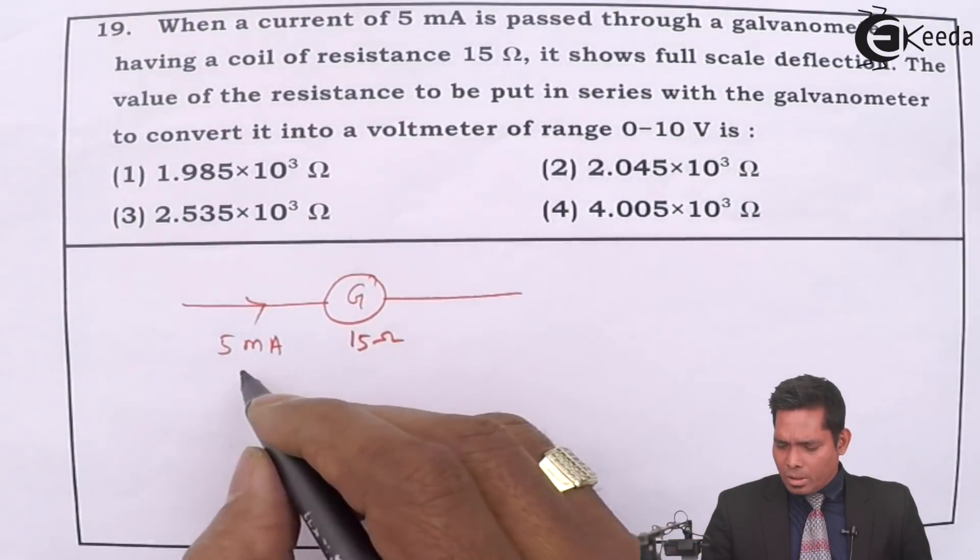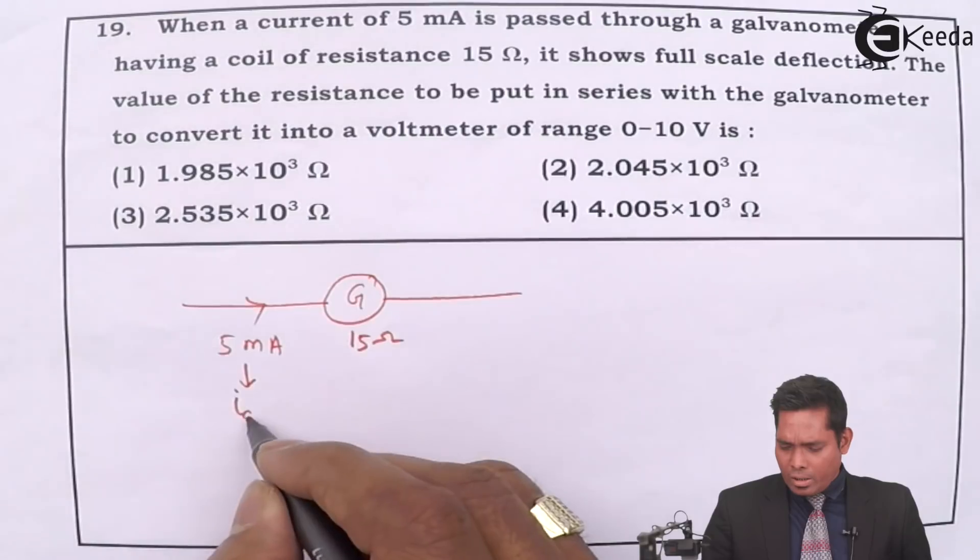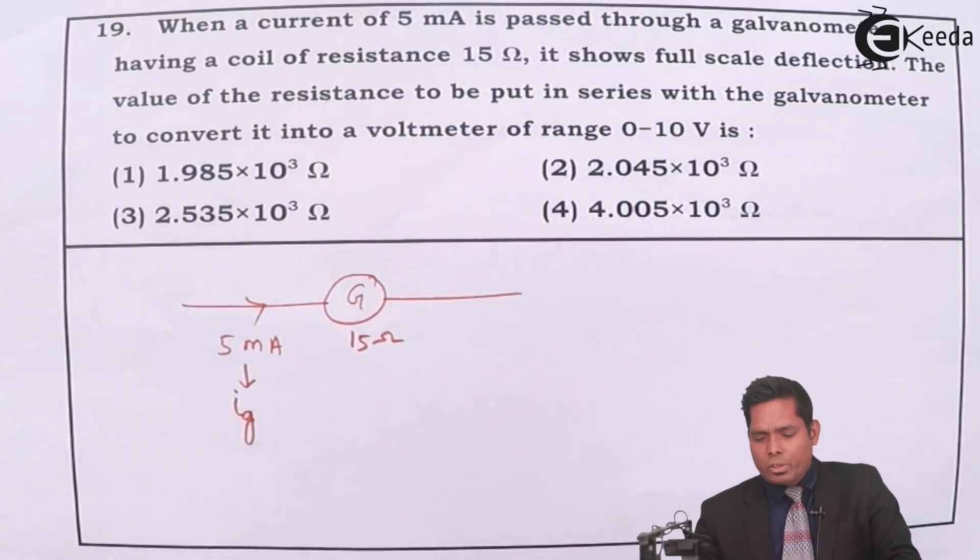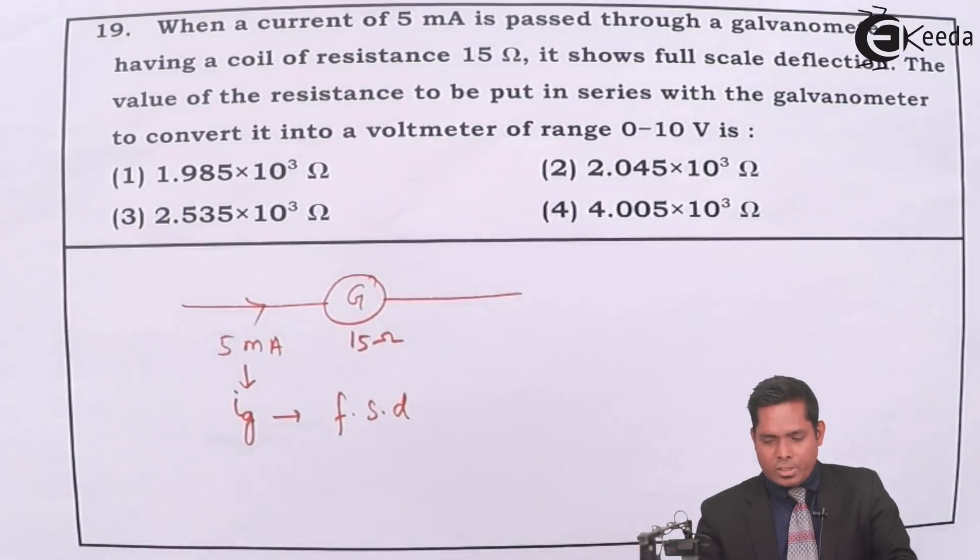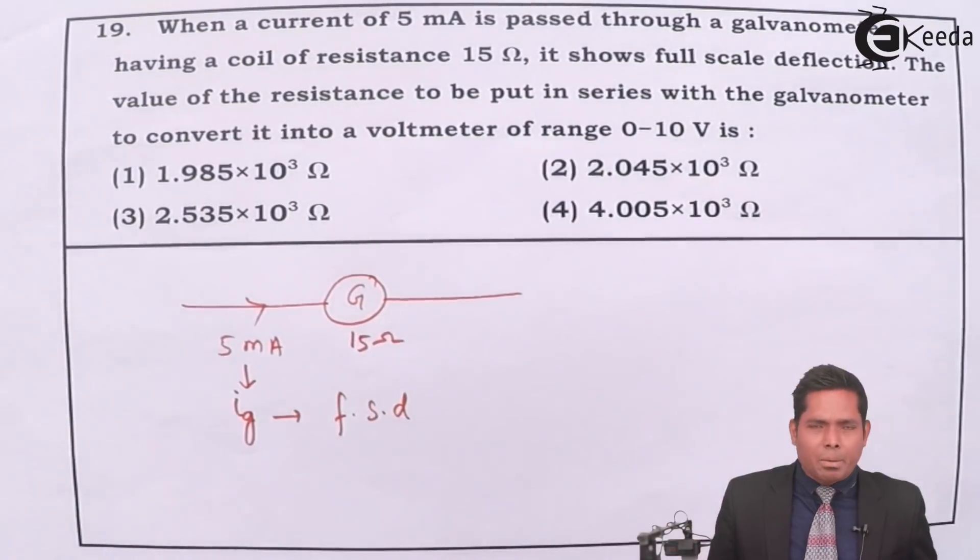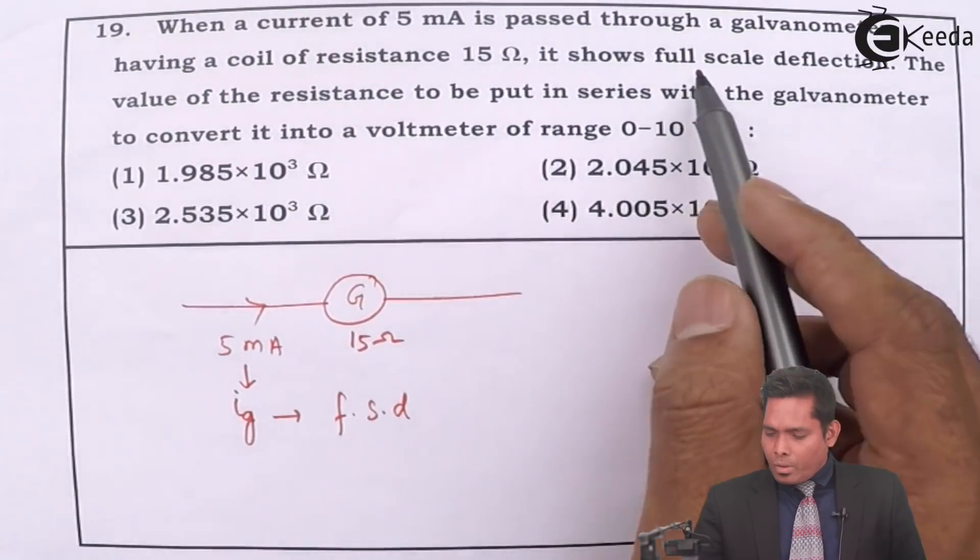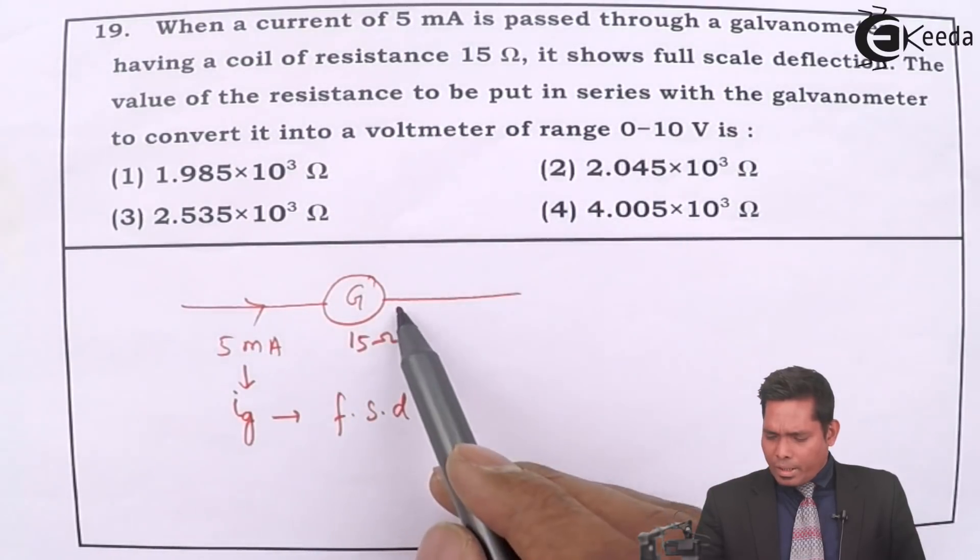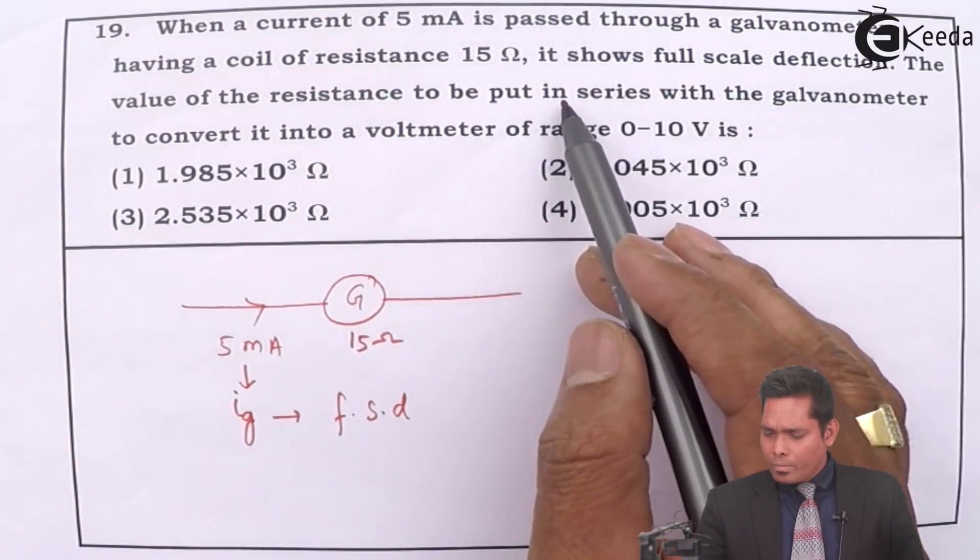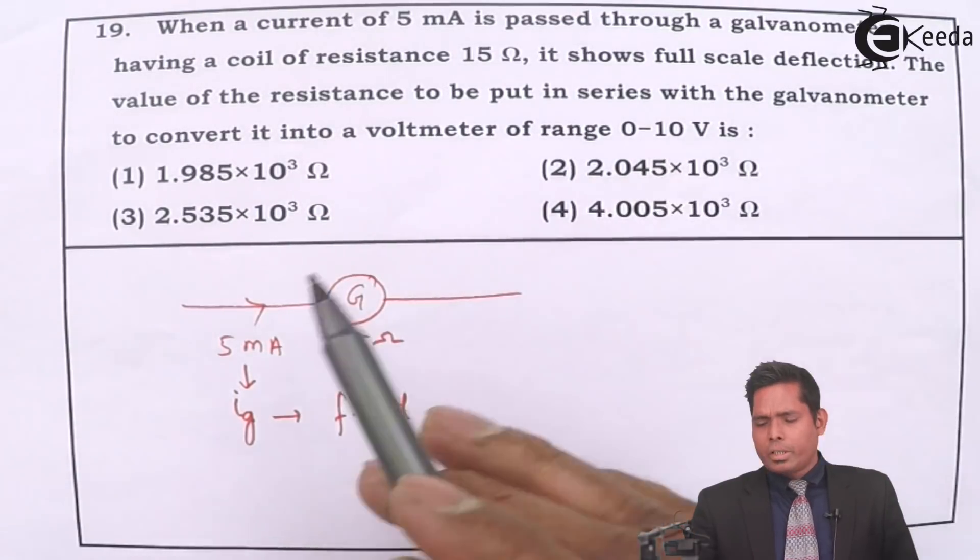That means this I_G is the current corresponding to which you get FSD. This is the maximum current the galvanometer can measure, which is 5 milliampere. The value of the resistance to be put in series - so I have to connect the resistance in series with the galvanometer to convert it into a voltmeter of range 0 to 10 volt.